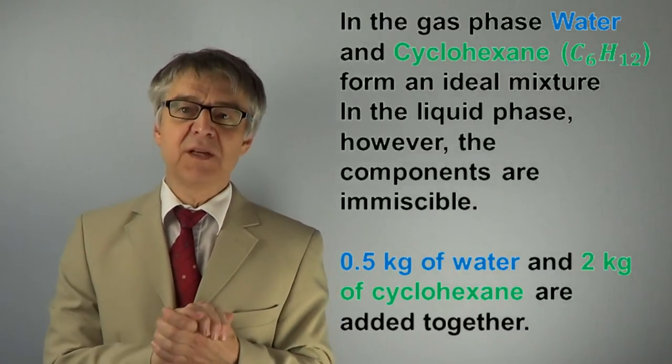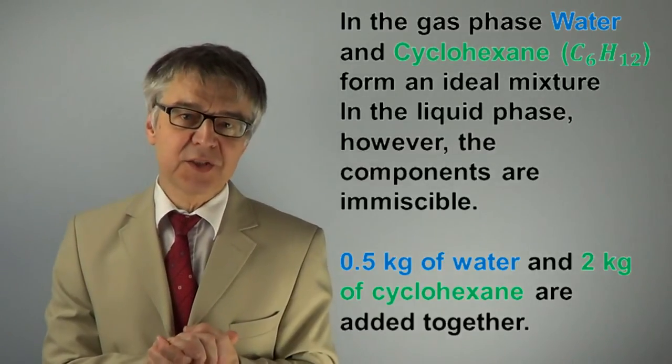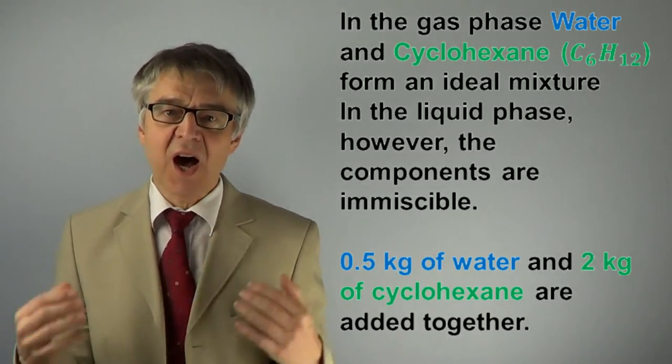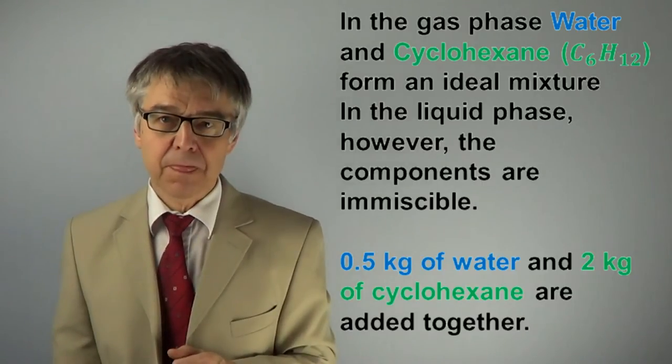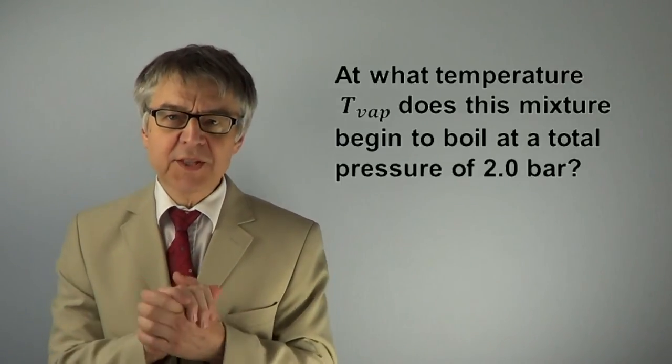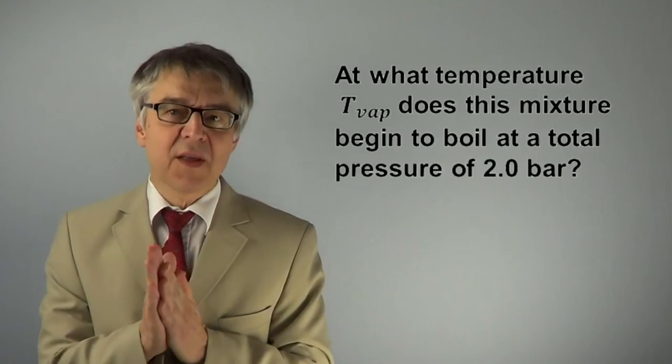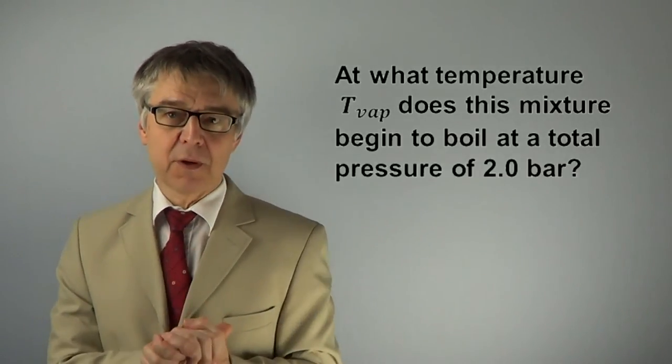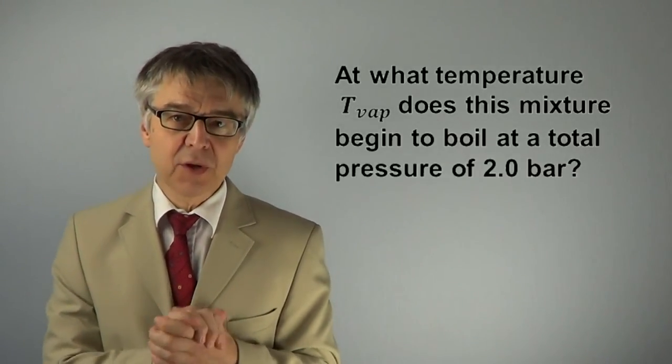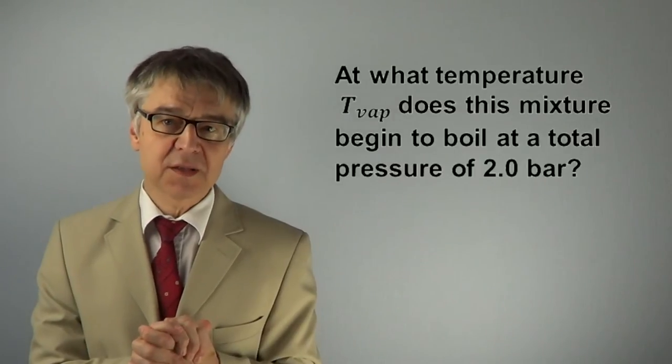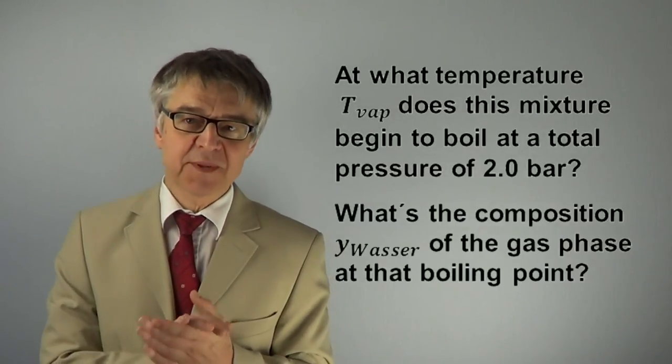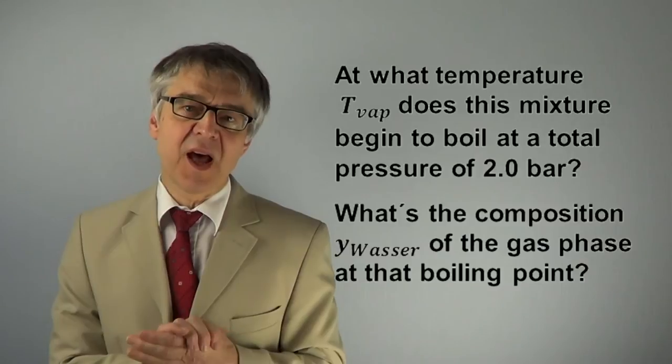Half a kg of water and 2 kg of cyclohexane are added together. At what temperature does this mixture begin to boil at a total pressure of 2 bars? And what is the composition of the gas phase at the boiling point?